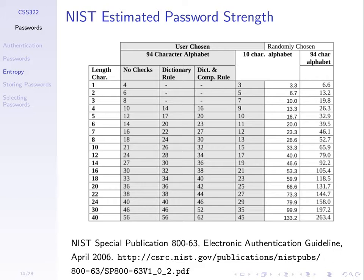The right two columns are for randomly chosen passwords. Take an example: if the user can choose from 94 possible characters — uppercase, lowercase English, digits, punctuation characters — the way to read this table is: if the user chooses a password of length 10 characters, then the entropy of that password is 65.9. So 94 possible characters, 10 characters long, gives 65.9 entropy. That's for a randomly chosen password. Let's confirm that.